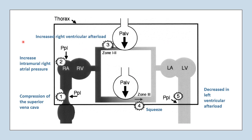With increased intra-alveolar pressure, there will be compression on the superior vena cava, and there will be increased intramural right atrial pressure and decreased transmural right atrial pressure, causing decreased venous return to the right side of the heart, or decreased preload.